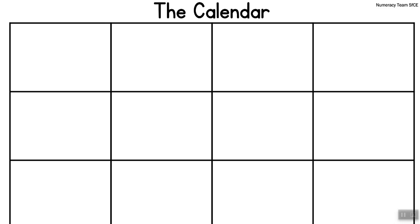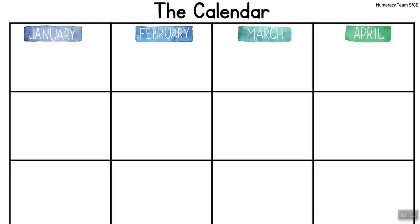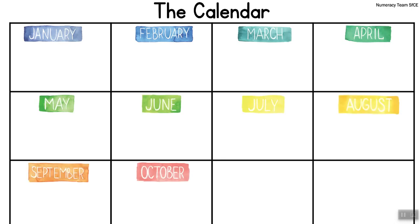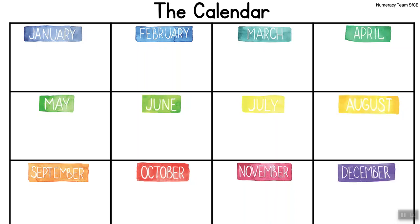Over here we are seeing the months as we said them before: January, February, March, April, May, June, July, August, September, October, November, December. Now children, as you can see, this calendar is only showing us the months. Sometimes our calendar also shows us the weeks and the days and the dates.